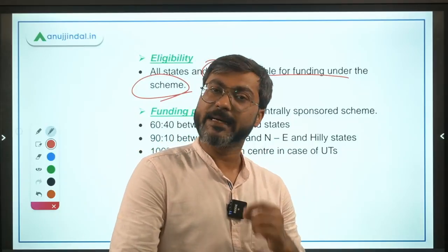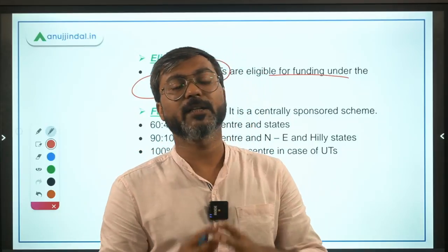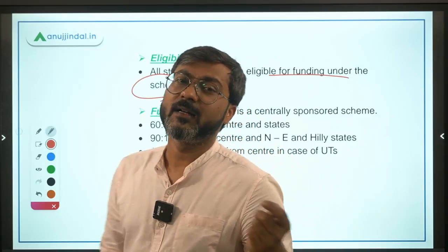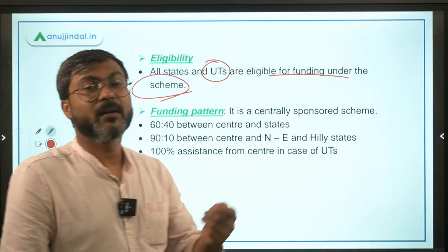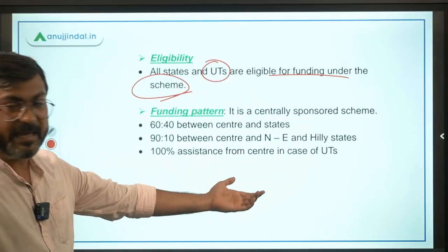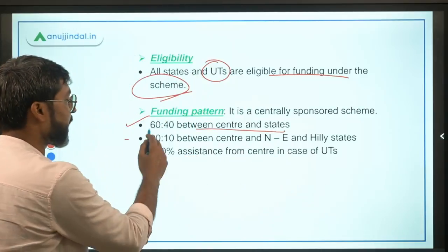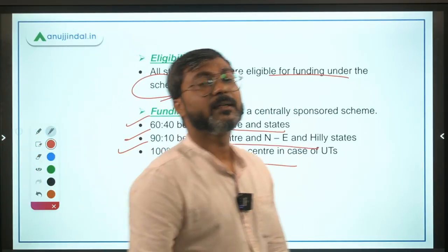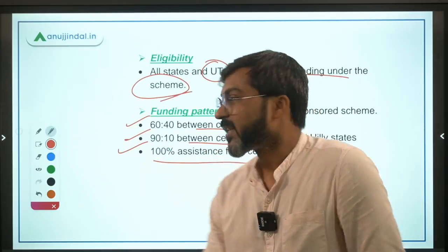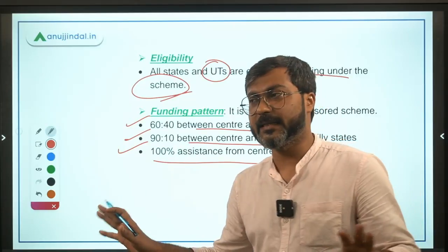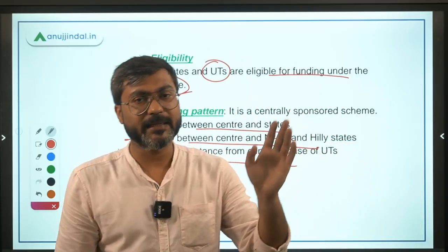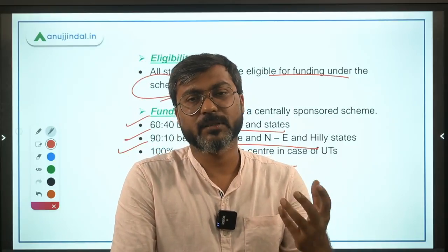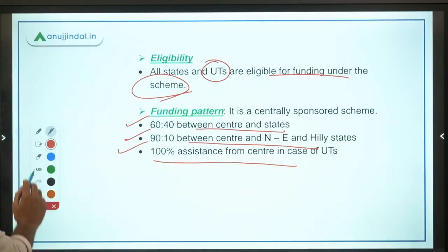As this is a centrally sponsored scheme, the funding pattern follows the general centrally sponsored scheme pattern: 60:40 between center and states, 90:10 between center and northeastern and hilly states, and 100% assistance from the center for union territories. This is easy to remember — just remember it is a centrally sponsored scheme and the general funding pattern applies here as well.